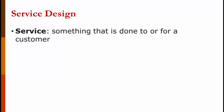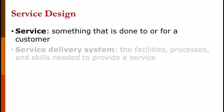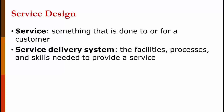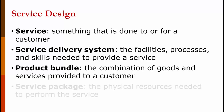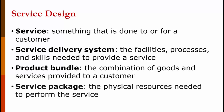Now for some terms. Service is something that is done to or for a customer. The service delivery system is the facility, processes, and skills needed to provide a service. The product bundle is the combination of goods and services provided to the customer — and there's not always a physical tangible product involved. The service package is the physical resources needed to perform the service. These could be fairly minor, as in the case of a barber, or major, as in the case of a surgery.